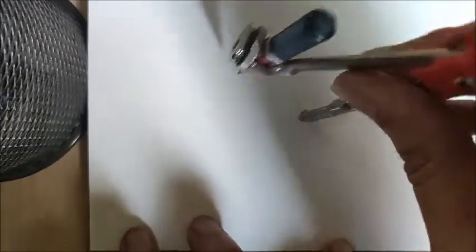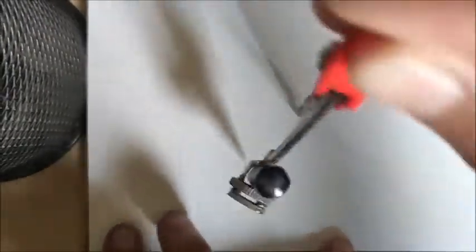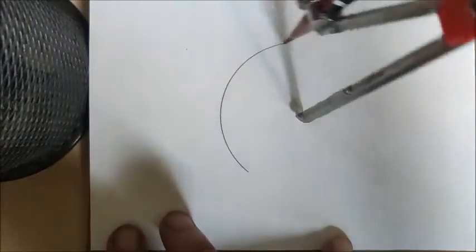The first step is to draw a circle, obviously, because we want to divide the circle into seven parts. Take appropriate distance between your divider as big as you want the circle to be. For example, I'm taking a three centimeter distance in my divider. Place your point on the paper, keep it steady, and let's draw a circle.